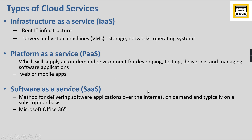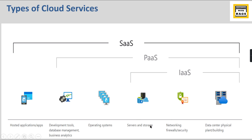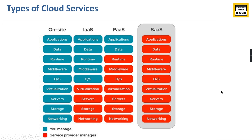In Azure, servers, storage, and networking are considered Infrastructure as a Service. Development tools and operating systems are considered Platform as a Service. Hosted applications are Software as a Service. These services are closely interrelated. Let's look at a diagram to visualize the differentiation between IaaS, PaaS, and SaaS and how they relate to cloud computing.